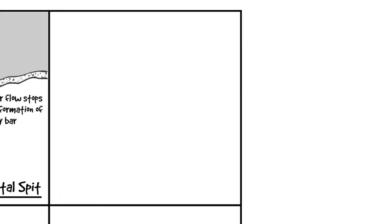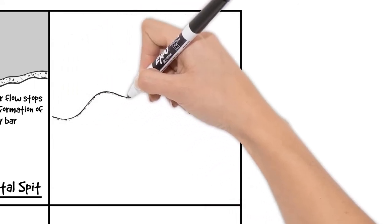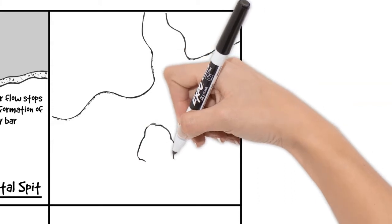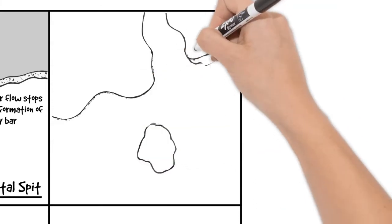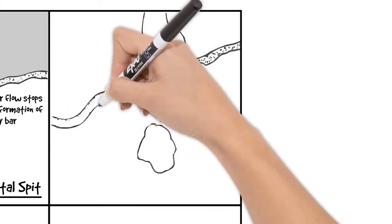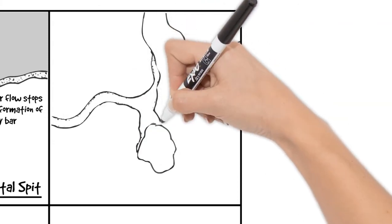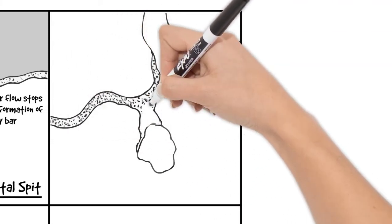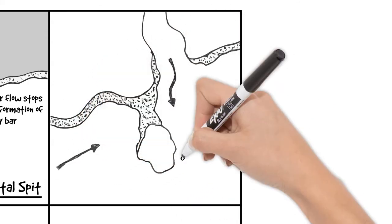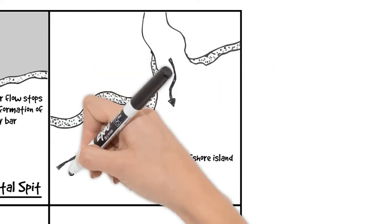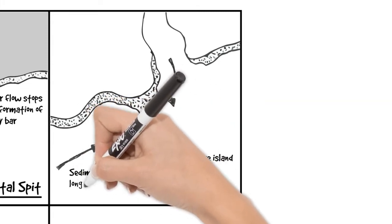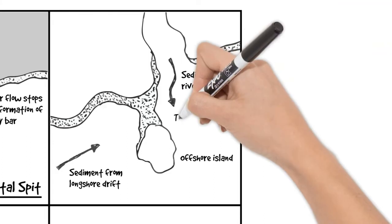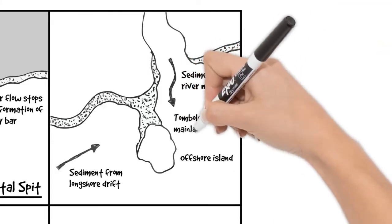Now the next diagram is a tombolo. A tombolo is where an island is connected to the mainland by a spit. So here we've got our longshore drift creating material and moving material along the coast, and it connects this island to the mainland. As they're off to our island, we've got sediment. It can either come from longshore drift or it can come from river mouths, such as at Llandudno.